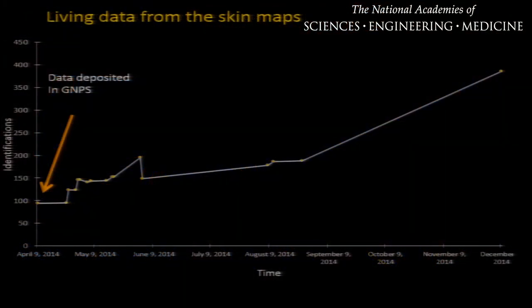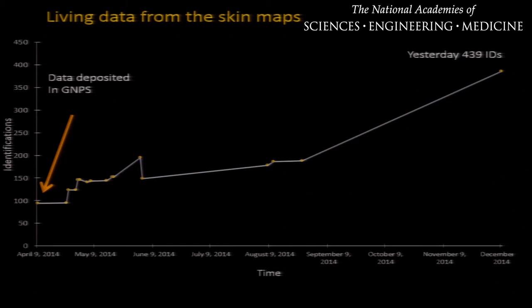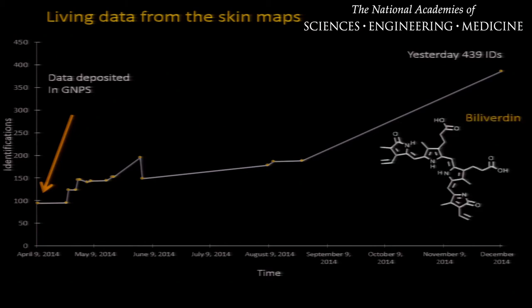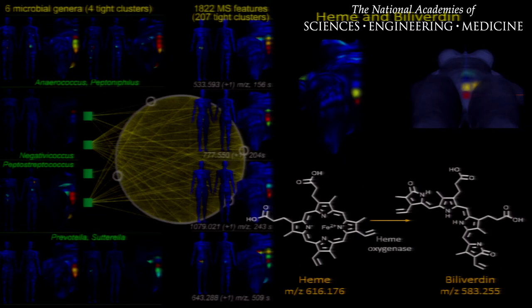This was really highlighted in the human skin study. When we started, we only had 100 identifications, and over time, as our libraries grew, we now have 439 identifications. During this time, one of the researchers in the GNPS community was working on heme degradation and uploaded spectra of molecules found in heme degradation. We were notified by email that one of these molecules is found in our skin data set. When we looked at the distribution of this molecule, we found it was mainly localized in the groin area of the women, and certain microbial communities were also localized in that area. This helps us build the hypothesis that maybe these microorganisms are involved in the physiological process of heme degradation.